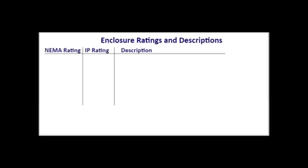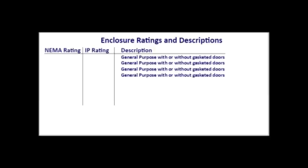Let's restate what the bus arrangements are in the motor control center. Here are the enclosure ratings for both NEMA and IEC along with their descriptions. It is important to note that these designations can vary by different manufacturers. There are four enclosures that carry the same description — general purpose with or without gasketed doors — but the NEMA rating and IP rating differ: NEMA 1 vented equals IP20, NEMA 1 filtered equals IP30, NEMA 1 non-vented equals IP40, and NEMA 1 with a drip hood equals IP41.